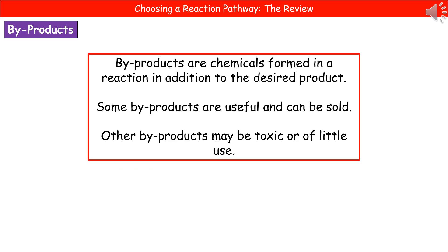The other aspect mentioned earlier is byproducts. A byproduct is a chemical formed in a reaction in addition to the desired product. Depending on the byproduct, sometimes they're actually very useful and can be sold to a different process. However, other byproducts could be toxic, which is problematic because there are many rules and regulations on how to deal with them. Or they could just be of very little use — you could generate vast quantities of something no one wants to buy, which obviously isn't great for your business.